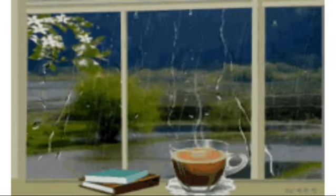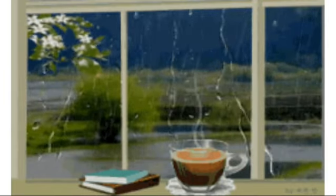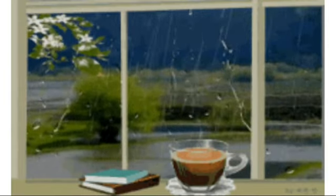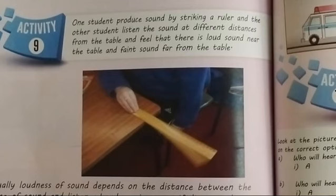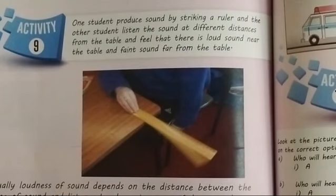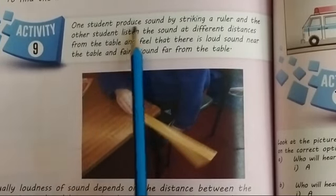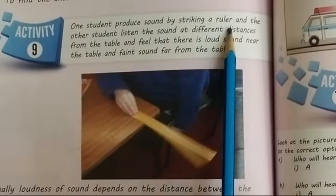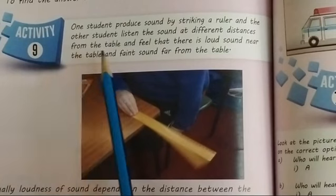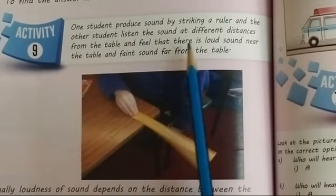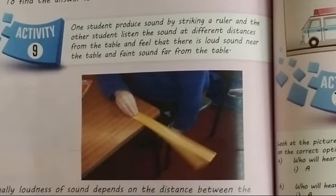The activity is in your book. First, open the book. I have opened the book, page number 88. We have activity 9 here. I am going to read the statement. One student produced sound by striking a ruler and the other student listens to the sound at different distances from the table and feels that there is loud sound near the table and faint sound far from the table.